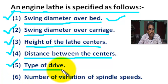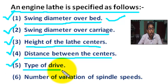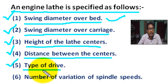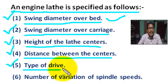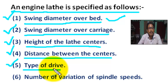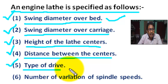Number five: type of drive — the drive may be individual drive or group drive. Individual drive means the lathe is powered by a separate motor. Group drive means more than one lathe can be operated by a single motor.